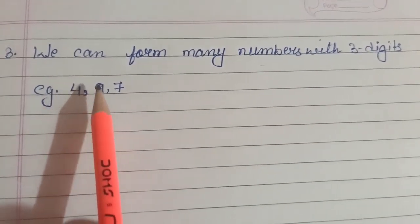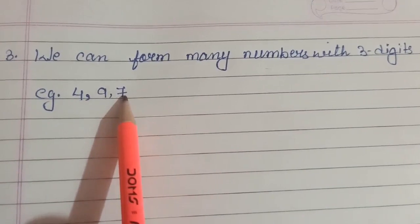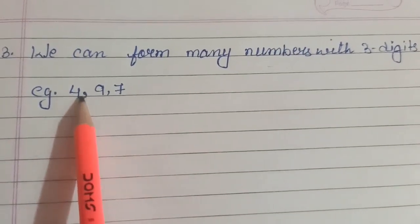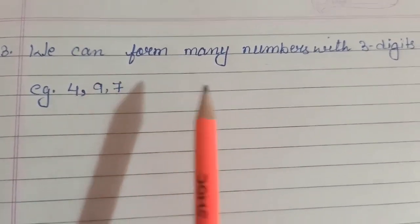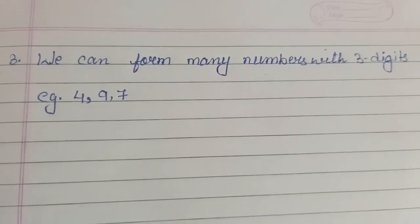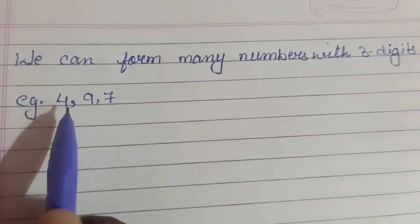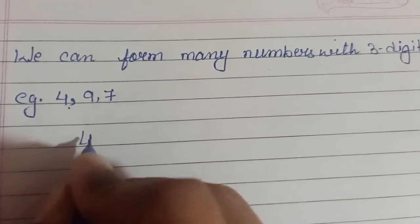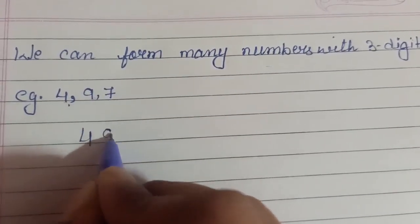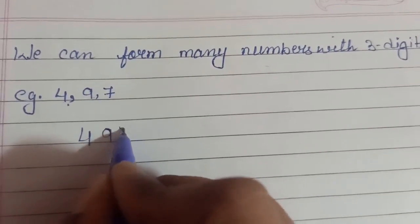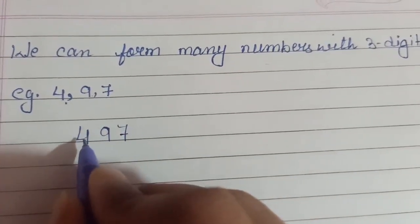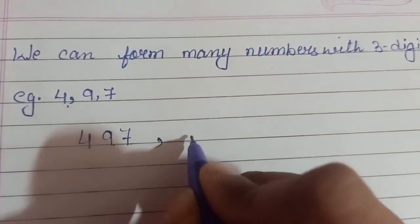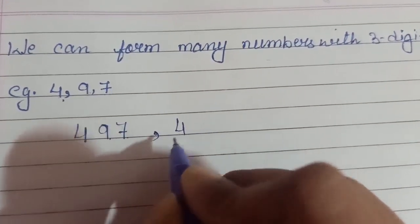We can form many numbers with three digits. Here 4, 9, and 7 are three digits, and we will form numbers by fixing one digit at the hundreds place. First we take 4 at the hundreds place, then write 9 and 7 as they are, giving us 497.